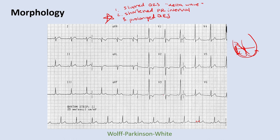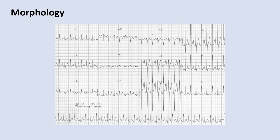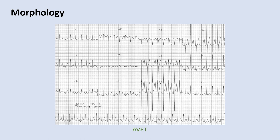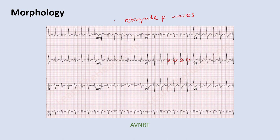This is AVRT — a supraventricular tachycardia with a narrow complex and a heart rate of about 150 (300 divided by 2 big boxes). Compare this to AVNRT: also about 150 bpm with a narrow complex, but in AVNRT you can see retrograde P waves — little upstrokes right after the QRS complex. The key finding: a regular narrow complex tachycardia with retrograde P waves should make you think about AVNRT.